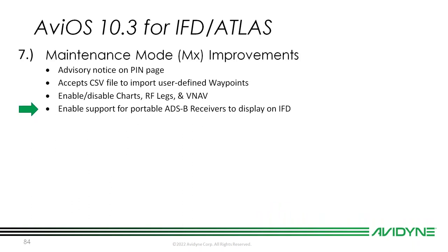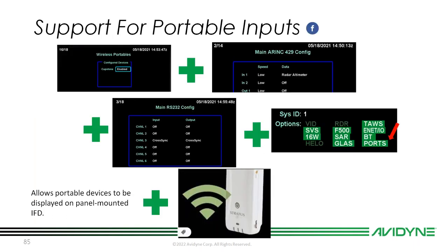The ability to enable support for portable ADS-B receivers to display on the IFD: in maintenance mode, under the new wireless portables page — one of the last maintenance mode pages you'll see in the 10.3 upgrade — if you have a device that sends wireless FIS-B traffic and weather to your iPad and apps and want that to show up in the IFD, enable that under wireless portables. It will filter and prioritize the data — usually prioritizing what's more important.